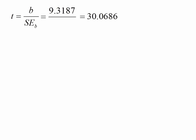So we have to calculate it by hand. To do that, you take 9.3187 and divide it with 30.0686. We get a value of 30.0, or excuse me, 0.3099.